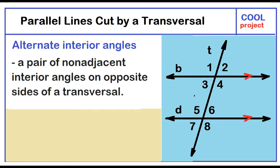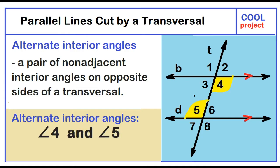Alternate interior angles — a pair of non-adjacent interior angles on opposite sides of the transversal. The alternate interior angles are angle 4 and angle 5, and angle 3 and angle 6.